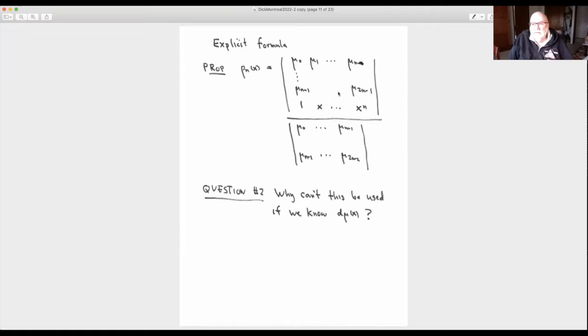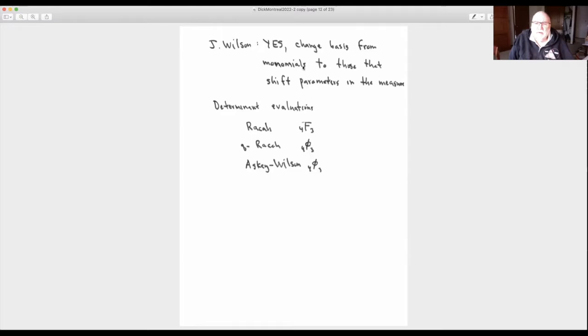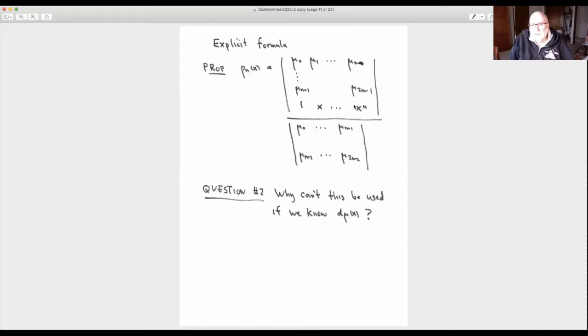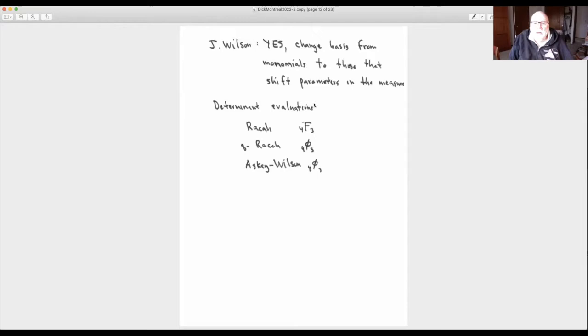Jacobi polynomials expand in terms of 1 minus x or 1 plus x. You'd again get some kind of a summation as an answer. Sounds like it just can't work. Oh, Jim Wilson figured out, yes, it does work. What you need to do is get rid of those monomials and take some other polynomials that affect a shift of parameters in the measure. So you want to get rid of these powers of x and take some other set of bases for the polynomials.